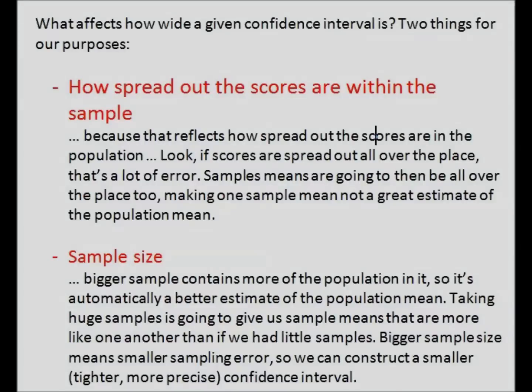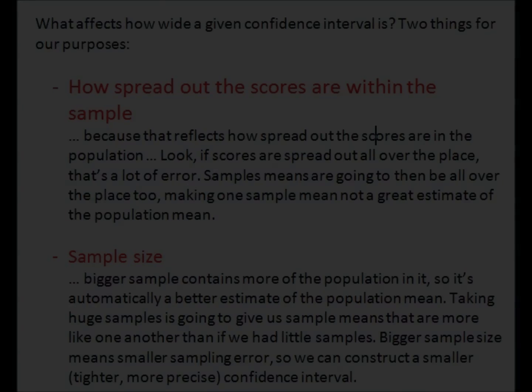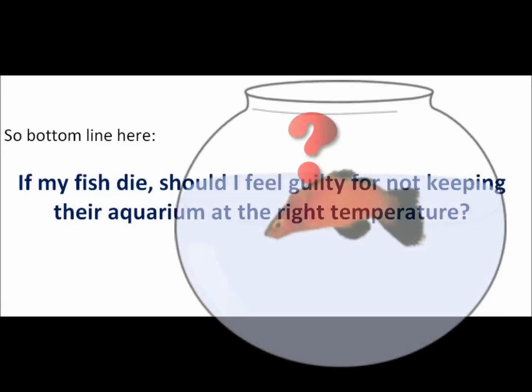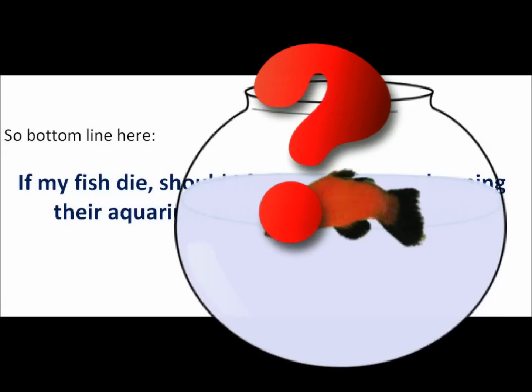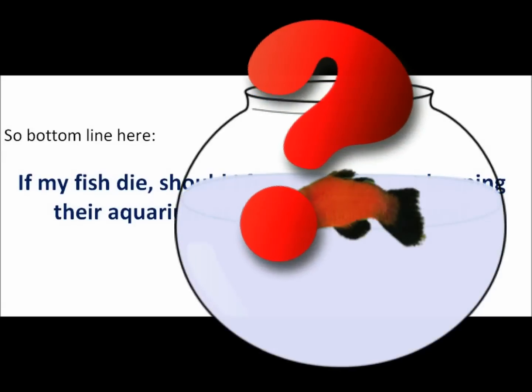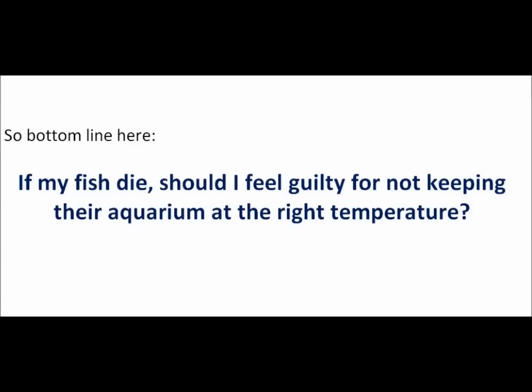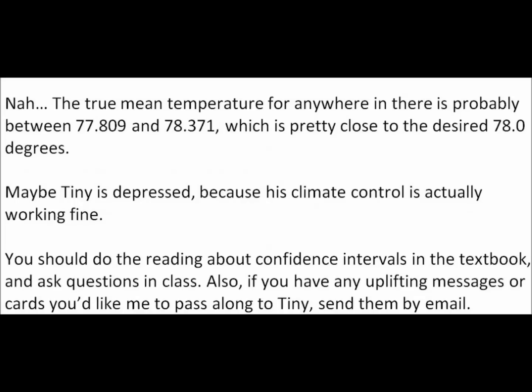We would get a smaller, tighter confidence interval — that should make sense. So the bottom line: if my fish die, should I feel guilty for not keeping their aquarium at the right temperature? Based on this, maybe not. The true mean temperature is probably between 77.8 and 78.4, which is pretty close to the desired 78.0 degrees.